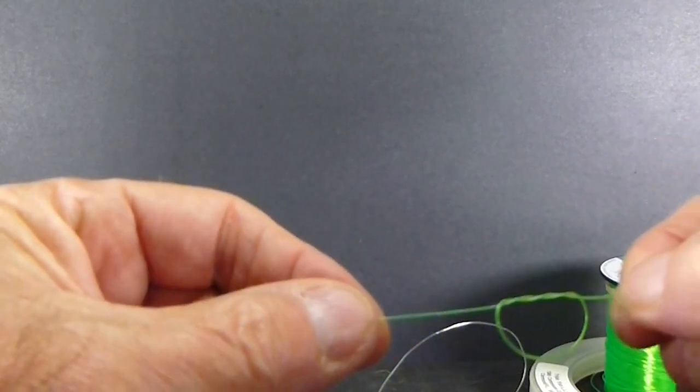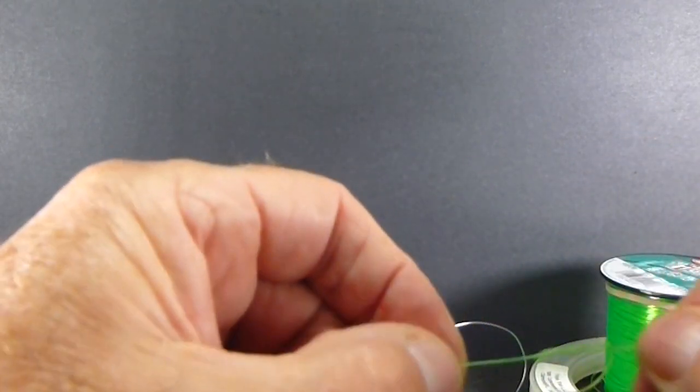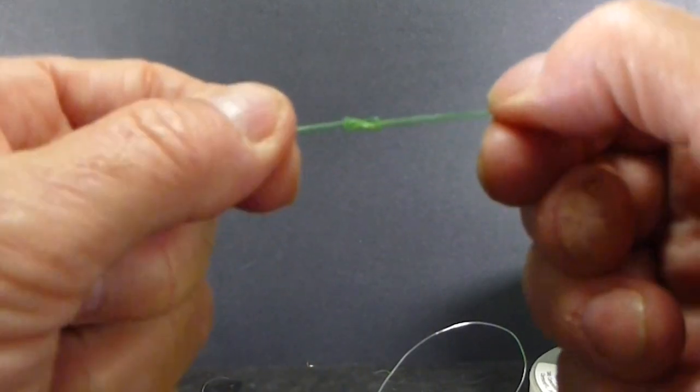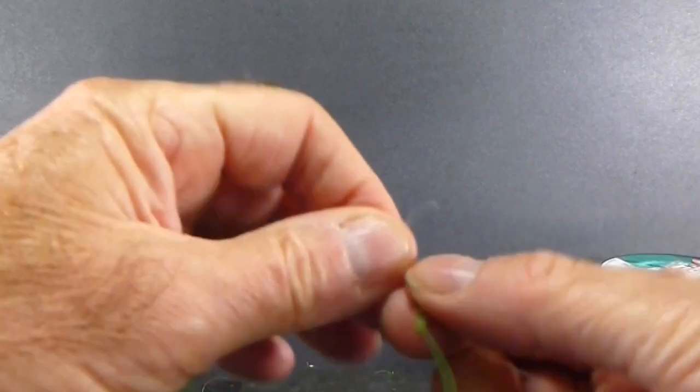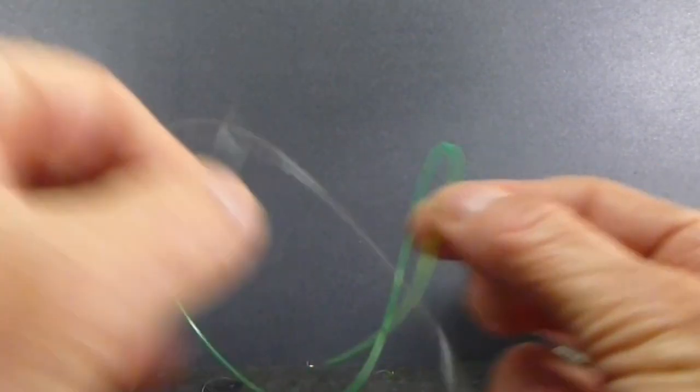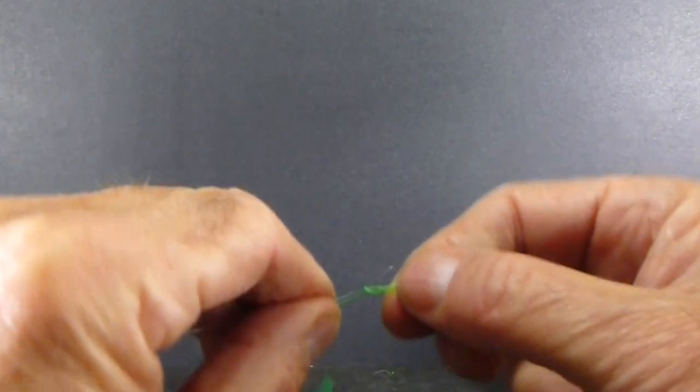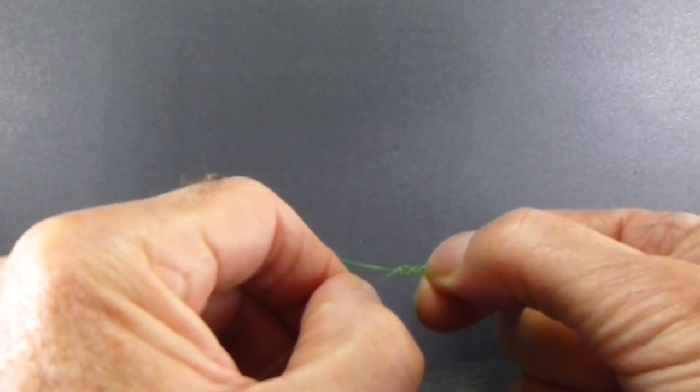And just go around twice again. So you've got your little figure 8 coming through there again. There's your 8. It's figure 8. Then I'll take the 20-pound or 25-pound, whatever, through.